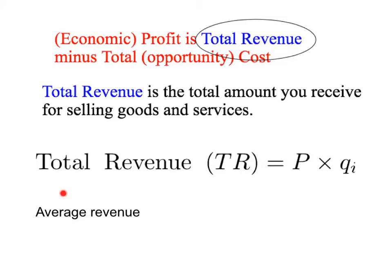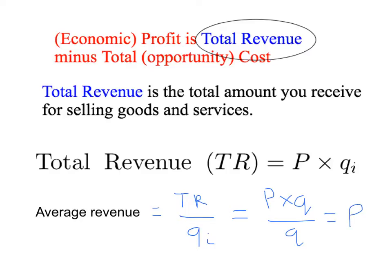We can also define average revenue. Average revenue is simply total revenue divided by the total quantity sold, Q. That's price times quantity divided by quantity, which brings us back to our uniform price P. So the average revenue for a business is just the uniform price P it charges for each unit it sells.